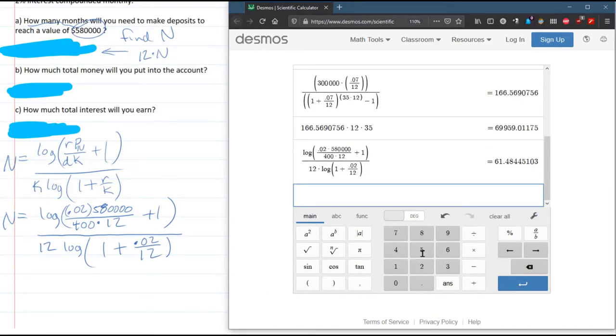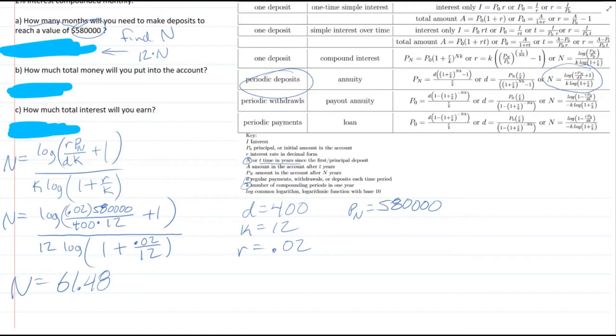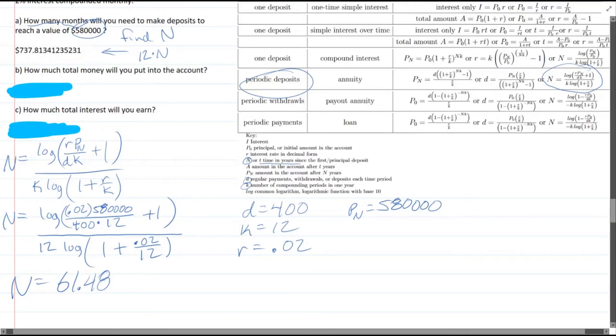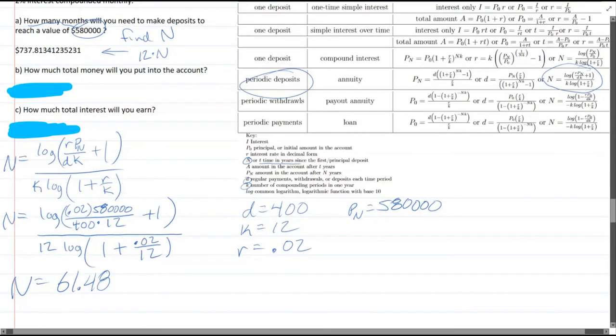And this is how many months? So this is 61.48. Actually we have to multiply that by 12. I don't know why there's a dollar sign right here in the answer, that's making me a bit skeptical.